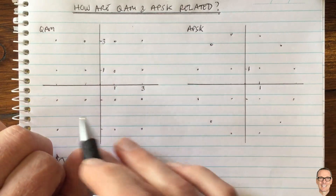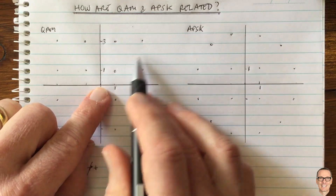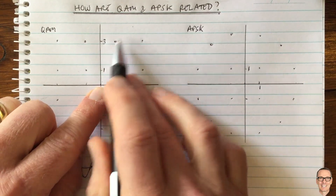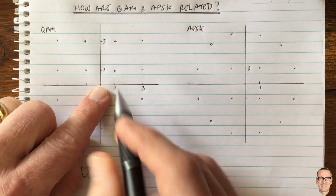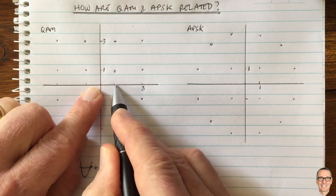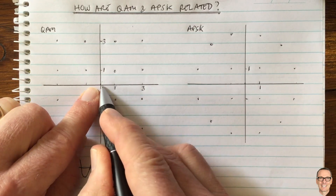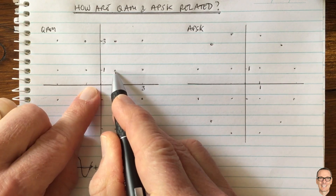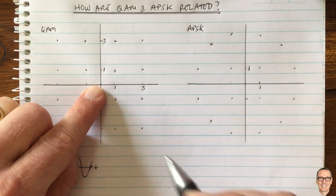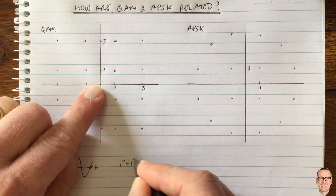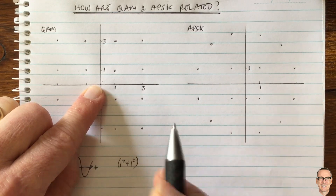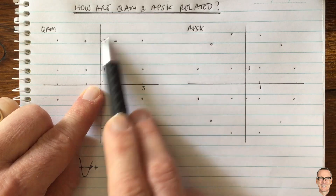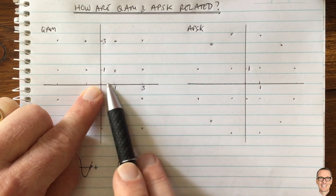We can work out the average power from the QAM constellation and make sure it's the same as for APSK. All the quadrants are equal, so we can just pick one quadrant. The average power in that quadrant: if we send the inner corner point, its power is one squared plus one squared. This point here has power one squared plus three squared.